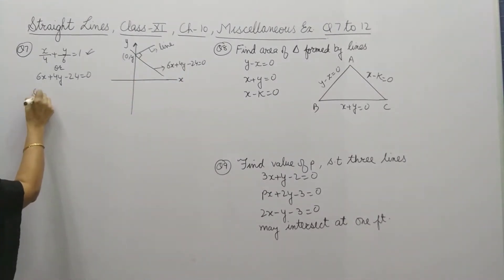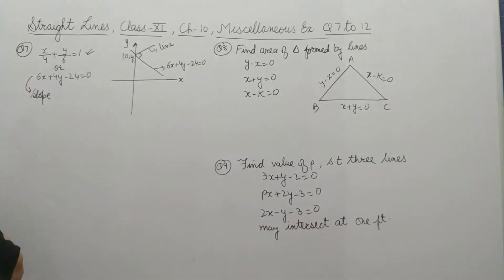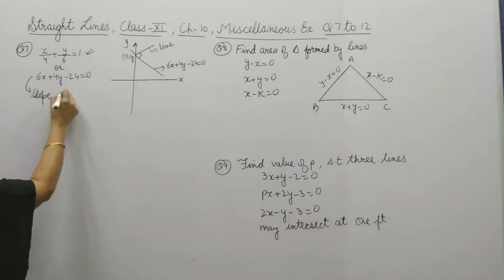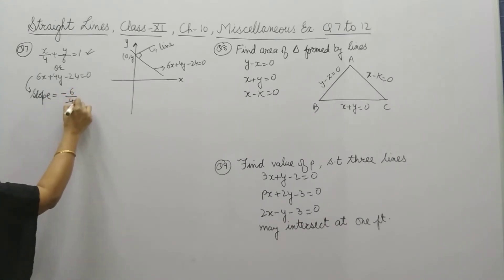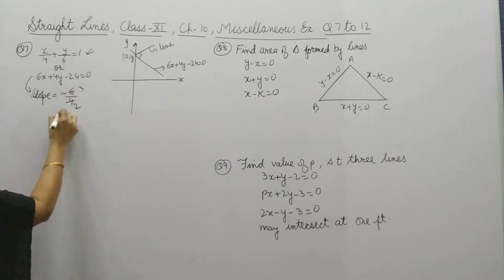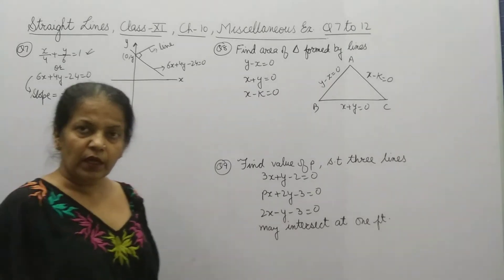The equation of this line is 6x + 4y - 24 = 0. Since it is the line whose equation we have to find, it is perpendicular to the given line. So first we will find out the slope of this line. The slope is -a/b, so -6/4, which gives us -3/2.